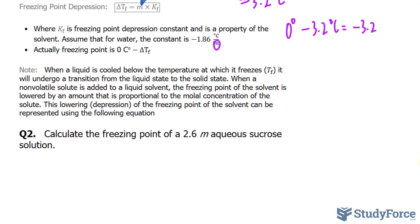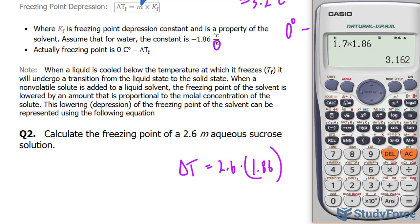Calculate the freezing point of a 2.6 molal aqueous sucrose solution. So this time sucrose is added to water. We'll use the exact same formula as before. I'll multiply 2.6 by 1.86. 2.6 times 1.86 gives us roughly 4.8.